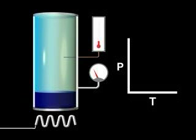A liquid confined to a cylinder, as shown here, with no other substances present, exerts a vapor pressure in the space above it. Molecules continuously transfer back and forth between the gas and liquid phases. The gas pressure in the cylinder represents the vapor pressure of the liquid that results from this equilibrium.